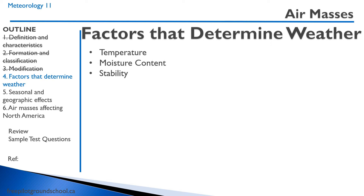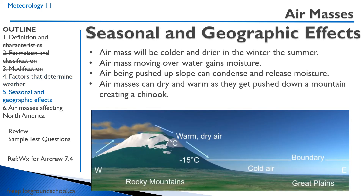The weather is determined by a number of factors of an air mass: the temperature of the air mass, the moisture content of the air mass, and its stability. Each one of these factors will modify the weather. So an air mass that is less stable won't necessarily produce thunderstorms if the moisture content isn't high enough. Even though an air mass has constant temperature and moisture properties, it can change over seasons and due to geographic effects.